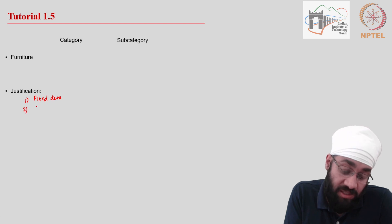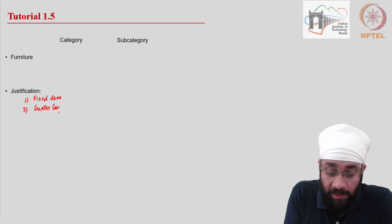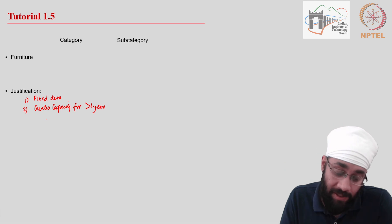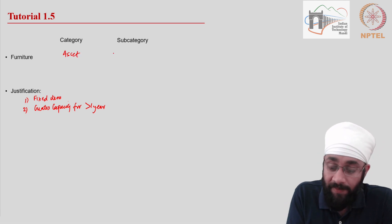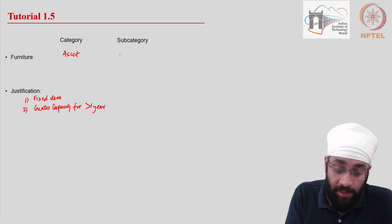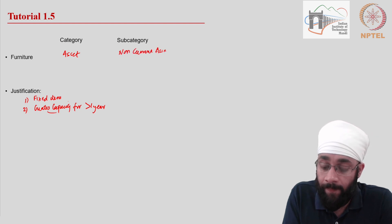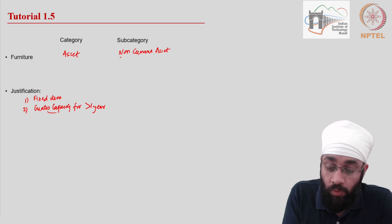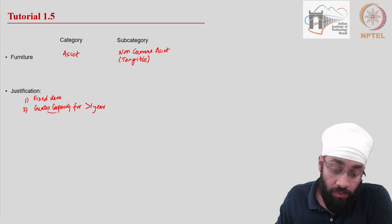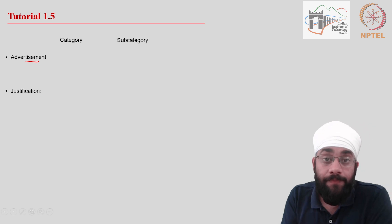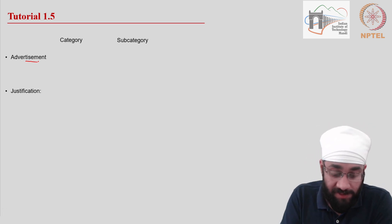Furniture is a fixed item. It helps you generate capacity for more than one year — it has a life of more than one year — so it will help you generate revenue in the long run. When that happens, it is called an asset. Since it has a longer time period and helps you generate capacity in the long run, you call it a non-current asset. Within non-current assets, furniture is also a tangible asset.